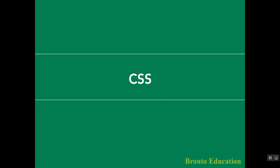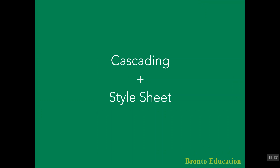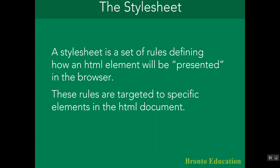CSS is the abbreviation of Cascading Style Sheet. We are going to use cascading style sheets when we have elements like paragraphs, headings, lists, tables, and buttons — we are going to change their styles using CSS. A style sheet is a set of rules defining how an HTML element will be presented in the browser. These rules are targeted to specific elements in the HTML document.